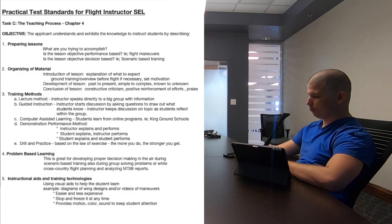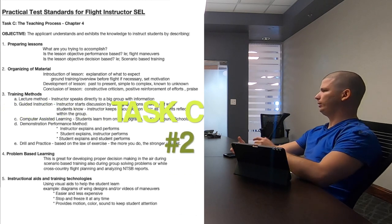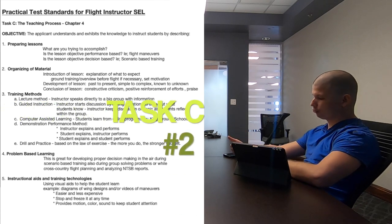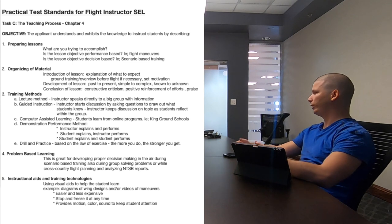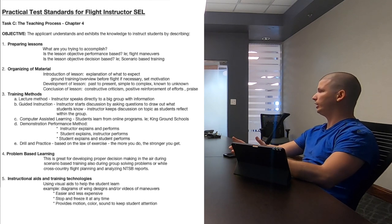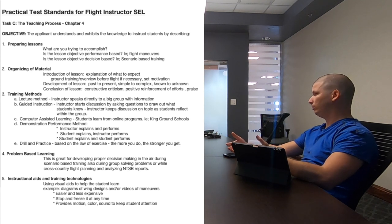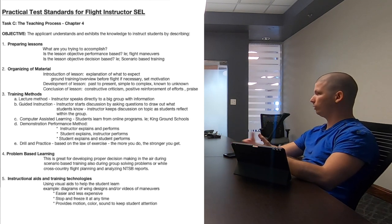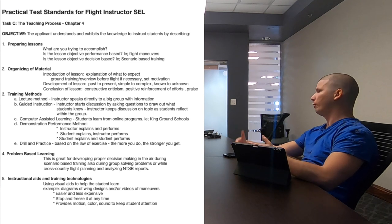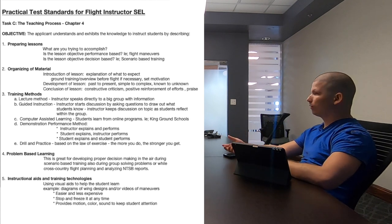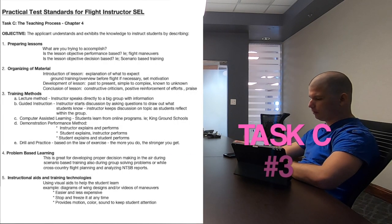Then you've got organizational material, which goes into three sections: introduction, development, and conclusion. Introduction is explaining the lesson and its objectives. Development is how we're going to get those objectives — it explains the maneuvers, how we're going to do them, what our standards are, and what we'll do to make them better. Conclusion is going over the lesson and making sure we accomplished the objectives. Then we have training delivery methods.